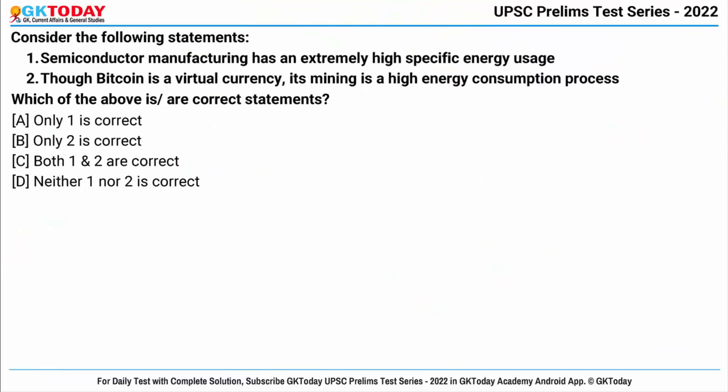Next question: consider the following statements. First, semiconductor manufacturing has an extremely high specific energy usage — yes, this is right. Second, though Bitcoin is a virtual currency, its mining is a high energy consumption process. First, let's understand what cryptocurrency is — it is a specific type of virtual currency which is decentralized and protected by cryptographic encryption techniques, for example Bitcoin and Ripple.